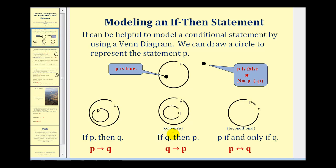For the converse, if we switch the order of the hypothesis and conclusion, we would have if-Q-then-P. Notice how we also switch the sets P and Q, so if Q is true, it's guaranteed that P would also be true.